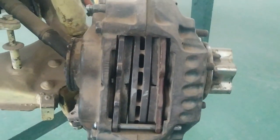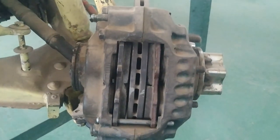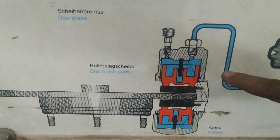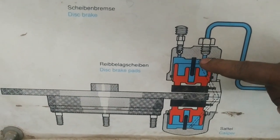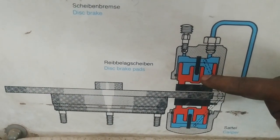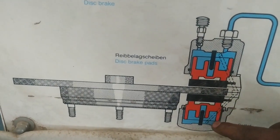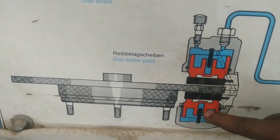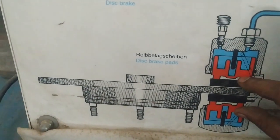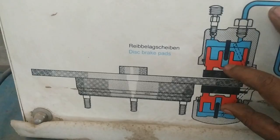As the brake is applied, fluid pressure enters the caliper on one side and is directed through an internal passage to the other side, or it can be directed by an external tube connected to the opposite half of the caliper. As pressure increases, the pistons force the brake pads against the rotor.